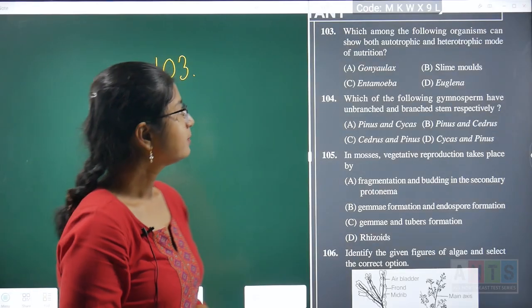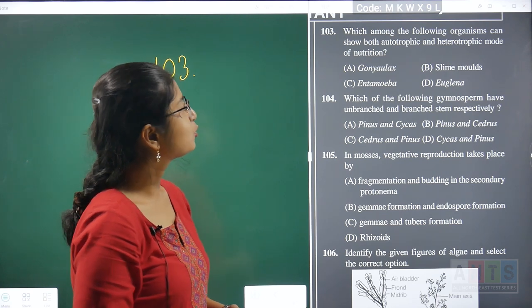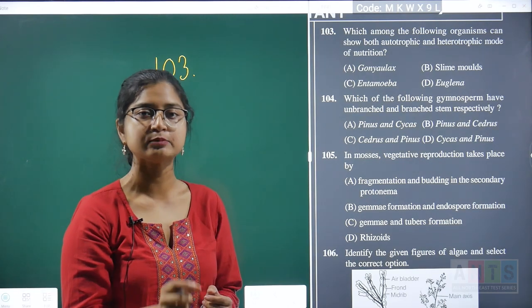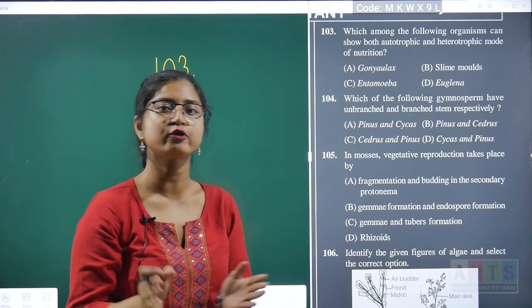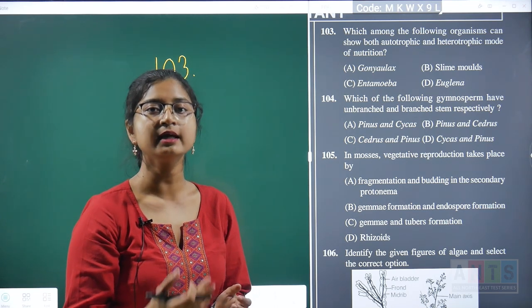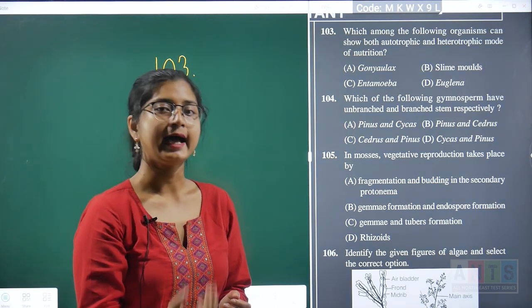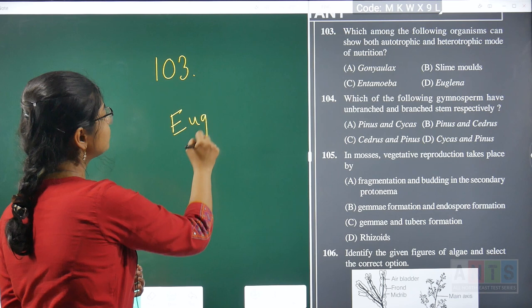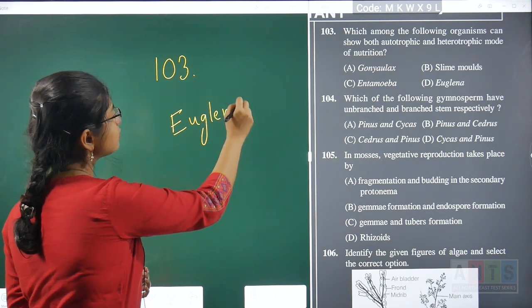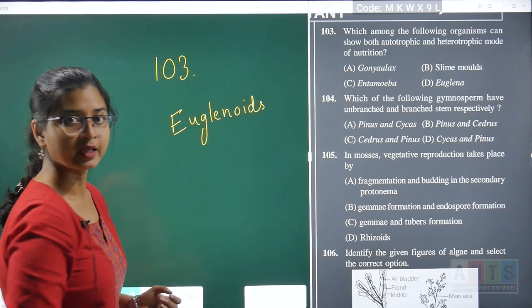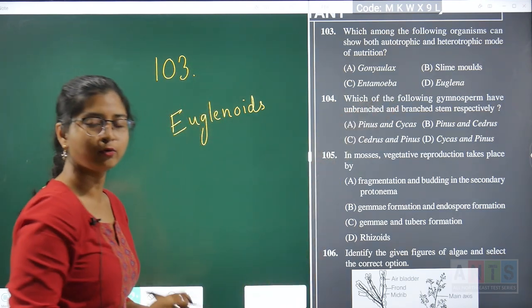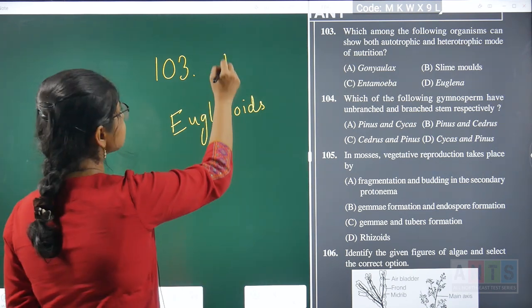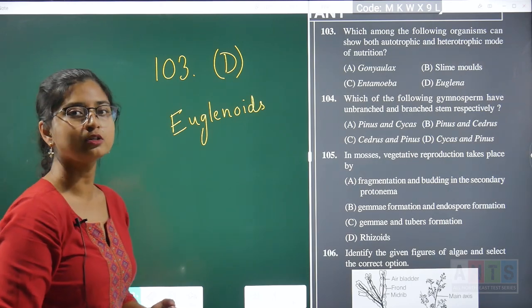Question 103: which among the following organisms can show both autotrophic and heterotrophic mode of nutrition? When an organism shows both modes, that condition is called myxotrophic nutrition. Myxotrophic nutrition is a characteristic feature of the protistan group called euglenoids. Hence, option D — Euglena — is the correct answer for question 103.